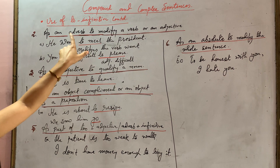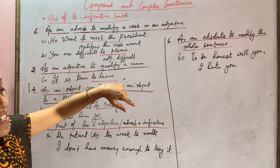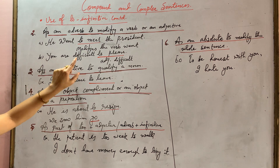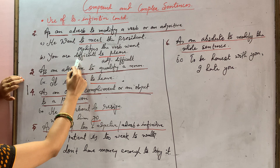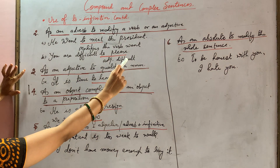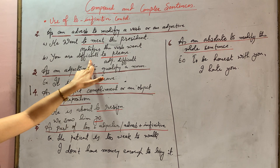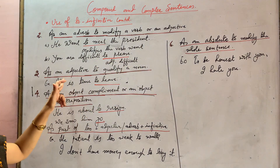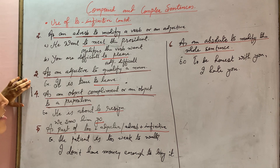Moving on, we will now see how the to-infinitive modifies an adjective. Consider the sentence: 'You are difficult to please.' Here, 'difficult' is used as an adjective, and 'to please' modifies it. So 'to please' acts as an adverb qualifying the adjective 'difficult.'